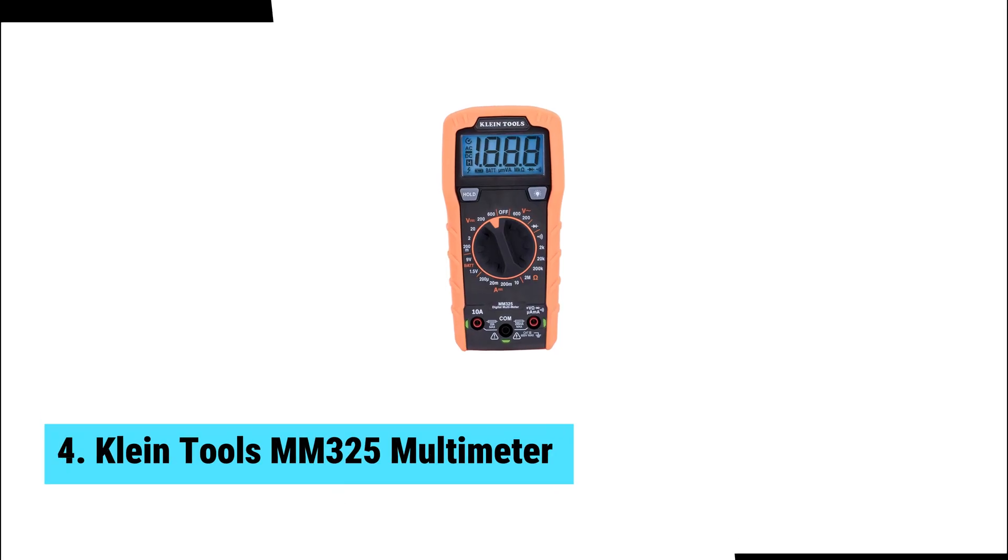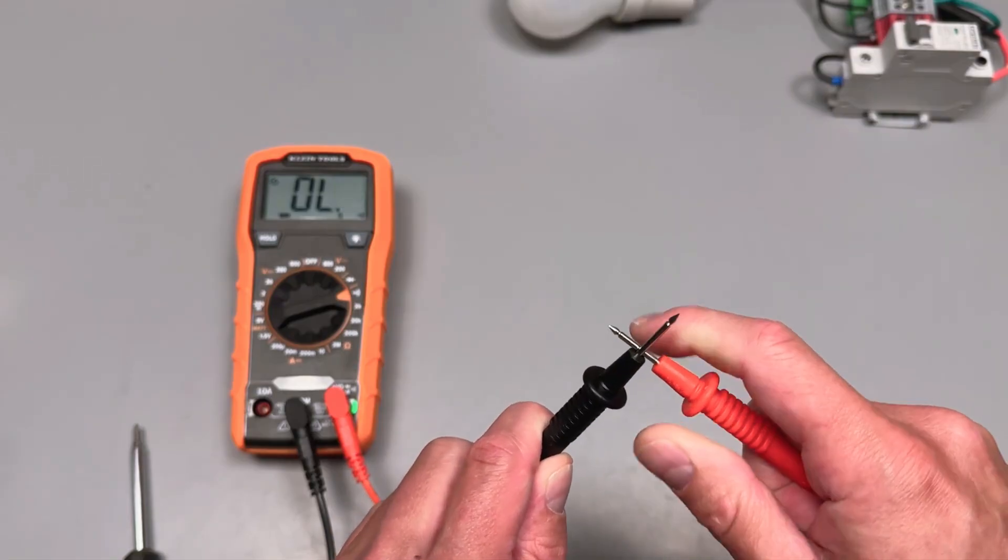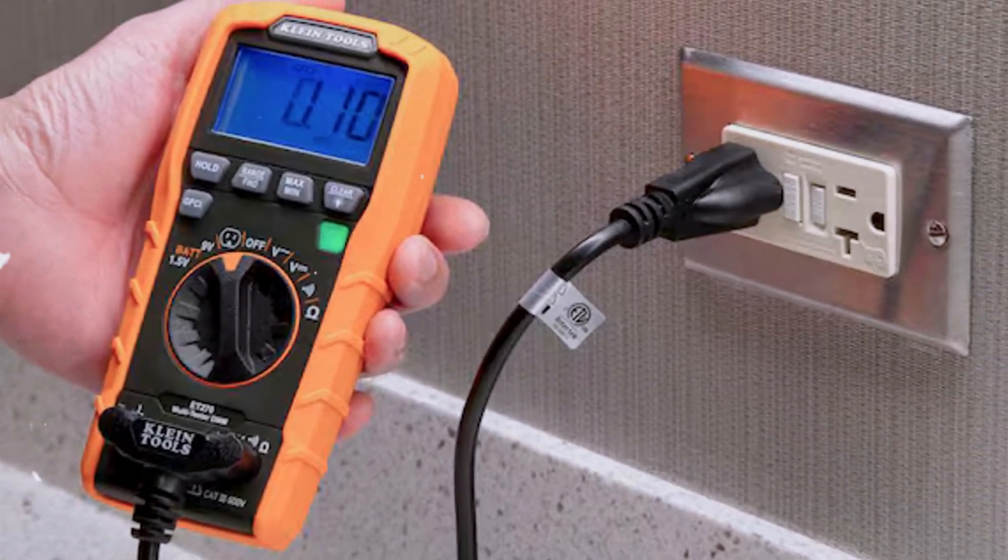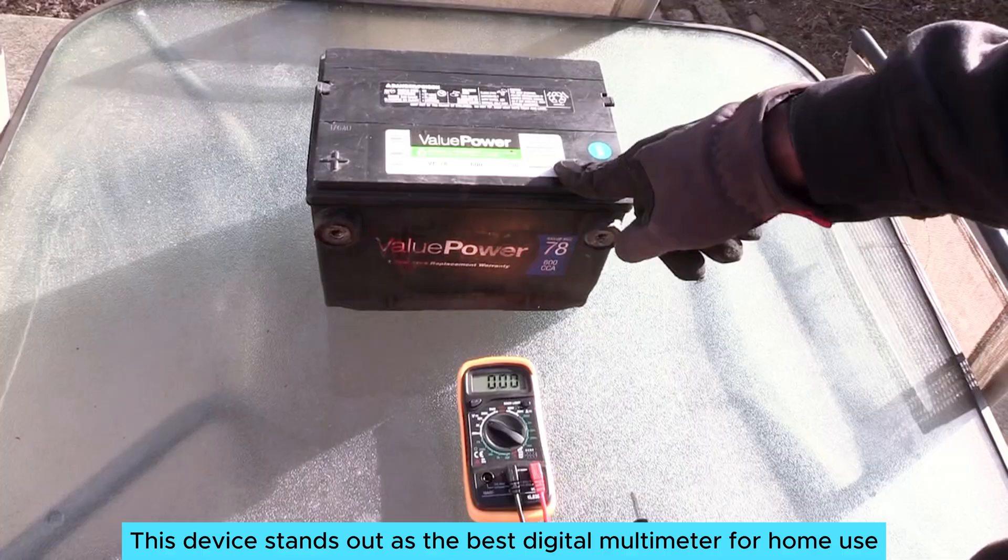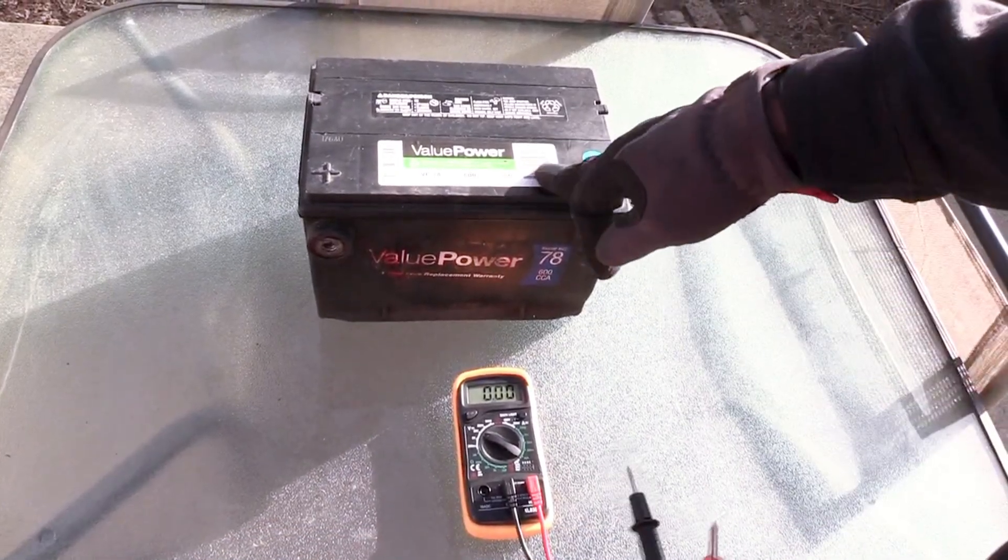At number 4, we have Klein Tools MM325 Multimeter, the best digital multimeter for home use. Experience reliable performance with the Klein Tools MM325 Multimeter. This device stands out as the best digital multimeter for home use, effortlessly tackling a variety of tasks.